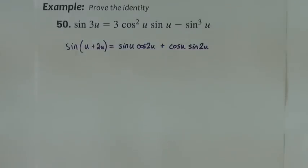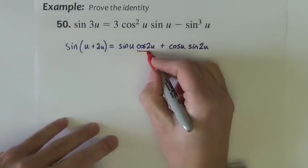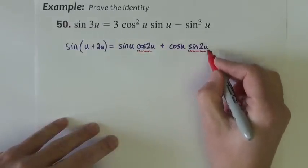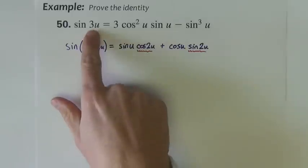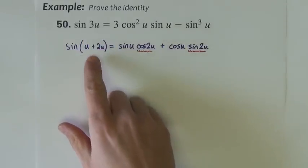Now, each of these pieces here, each of those 2u pieces, I'm going to rewrite similar to how I rewrote the 3u as a sum.